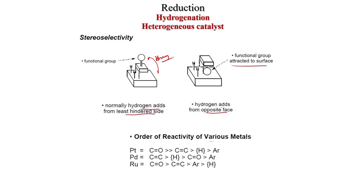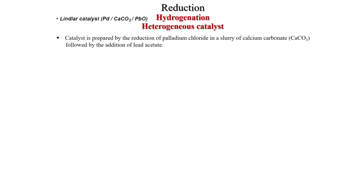On the catalyst surface: hydrogen adsorption and dissociation-activation occur, then alkene adsorption and alkene activation occur, and then hydrogenation gives a predominantly syn product. Stereoselectivity is also possible — normally hydrogen adds from the least hindered side and the functional group is oriented away from the surface. Alternatively, if a functional group is attracted to the surface, hydrogen adds from the opposite side. The order of reactivity of various metals: platinum, palladium, ruthenium; and functional groups: C≡C > C=C > C=O.